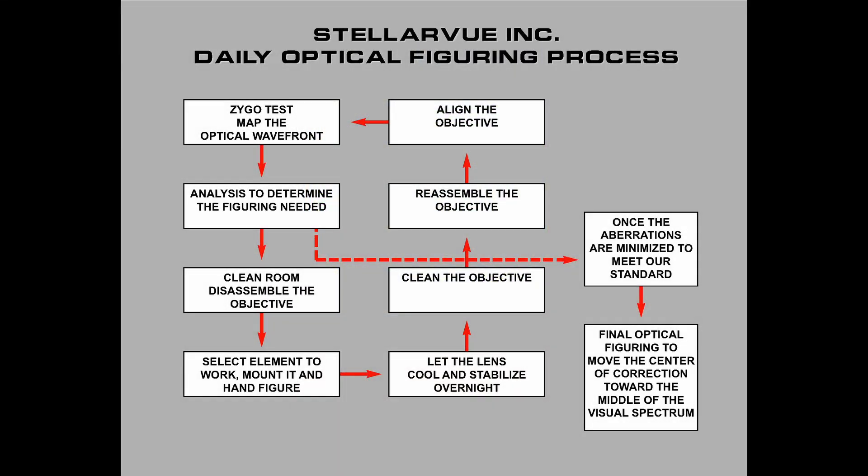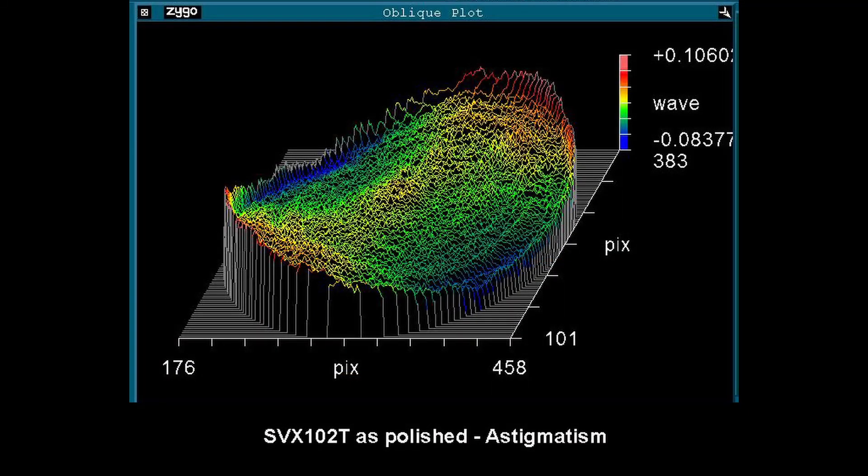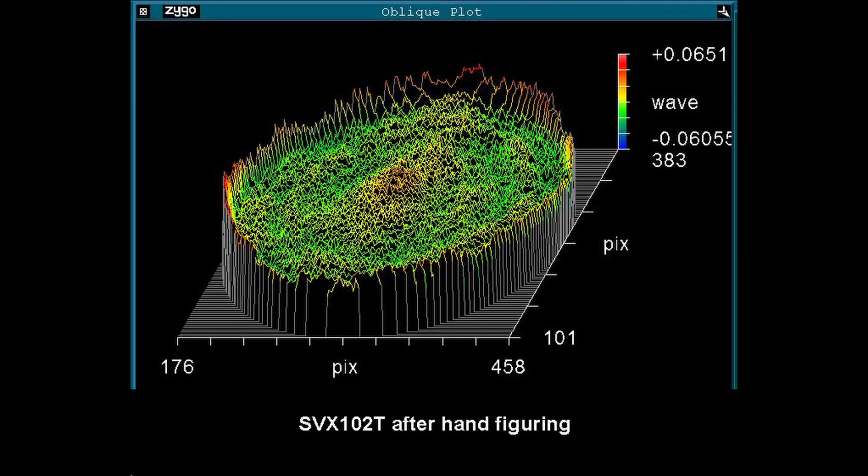Each objective goes through this improvement process over and over again for weeks as we slowly and meticulously minimize aberrations. The difference between a machine polished and hand-figured objective is often quite obvious in actual practical use.